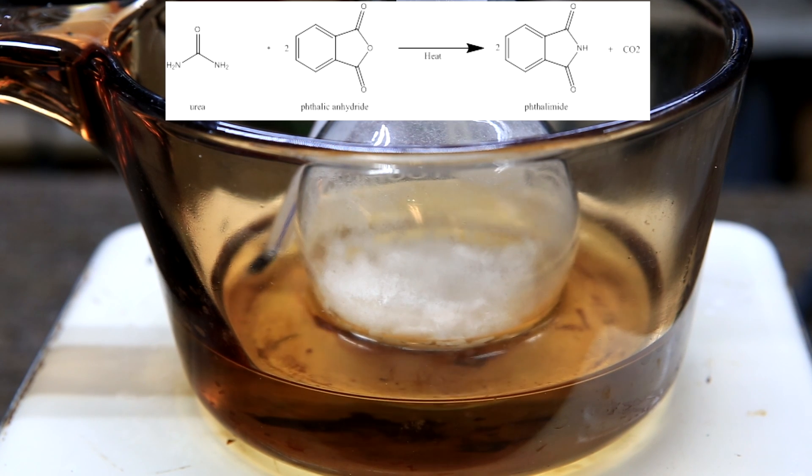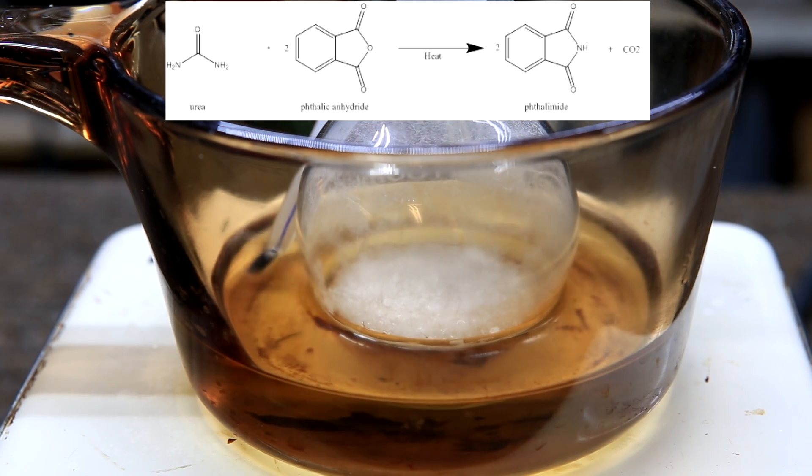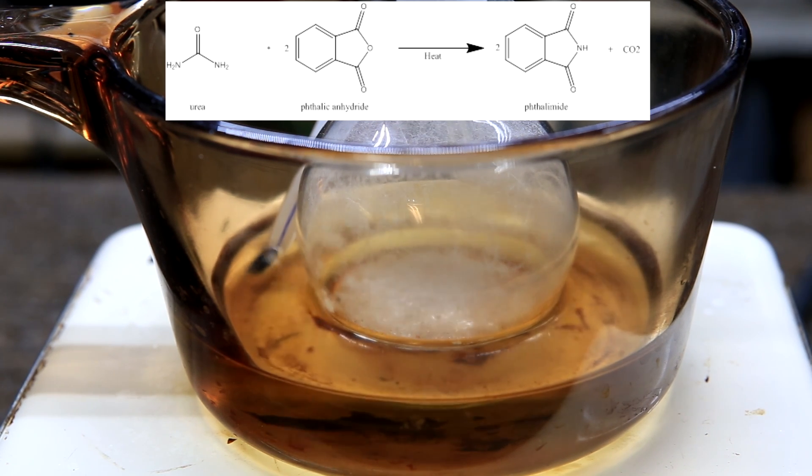The overall reaction that is occurring is shown above. In the solid state not much reacting occurs, but once we reach the melting point of urea which is around 135 degrees Celsius, that's when the reaction starts taking place. First the urea reacts with the phthalic anhydride to form phthalamide, CO2, and ammonia. The ammonia that's produced is able to react with another molecule of phthalic anhydride and form another molecule of phthalamide.